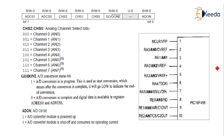In PIC18 we have eight channels, meaning we can interface eight analog signals or sensors. As explained in the ADC selection process, the first step is to select the channel or input. These three bits are used for channel selection.